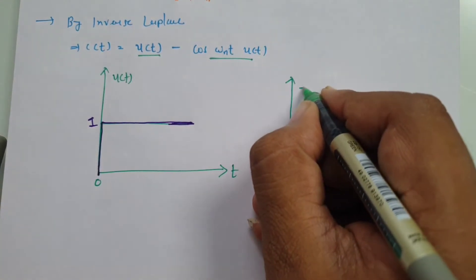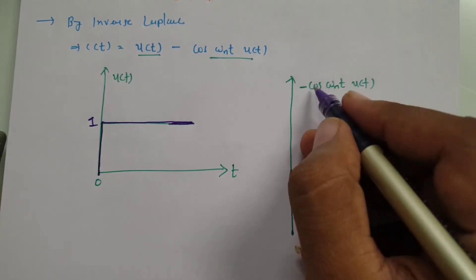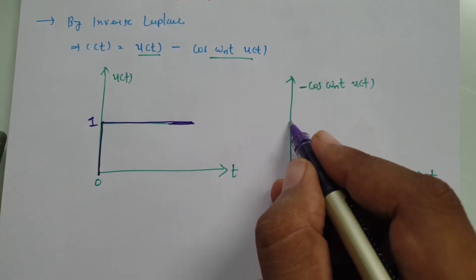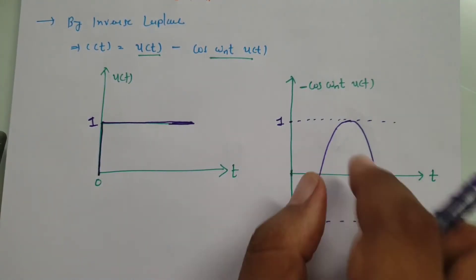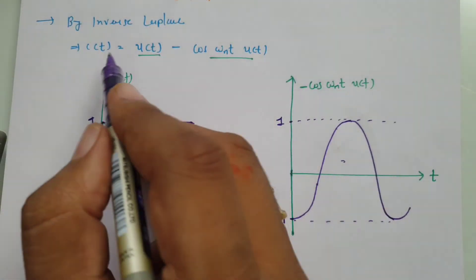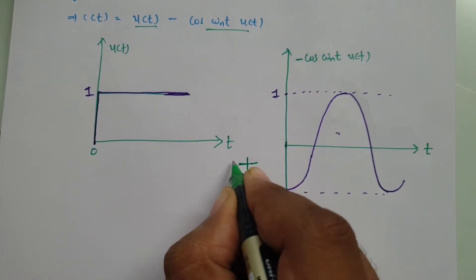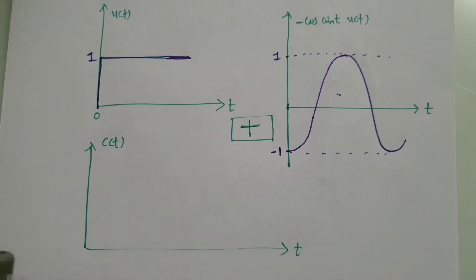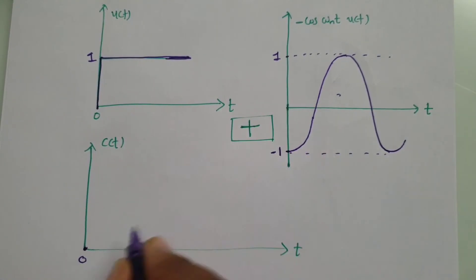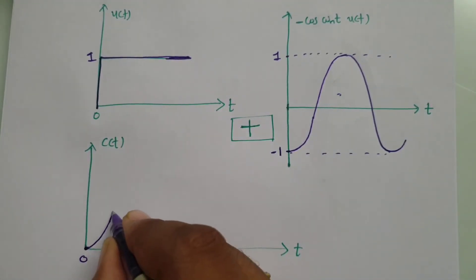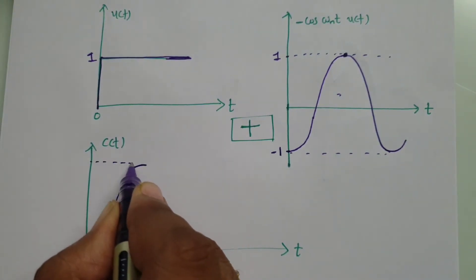Now I want to plot minus cos(omega_n t) times u(t). The cosine function starts at maximum one, but minus cos(omega_n t) starts at minus one. Now adding the two functions to get output c(t): at t equals zero, it is one minus one, which equals zero. Then the output increases, and at the half-period instant it reaches one plus one, which equals two. So the output reaches a maximum of two.